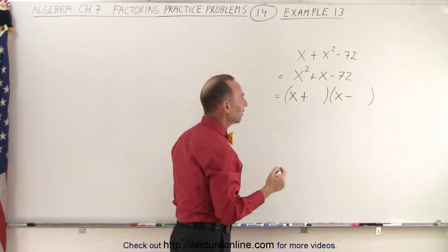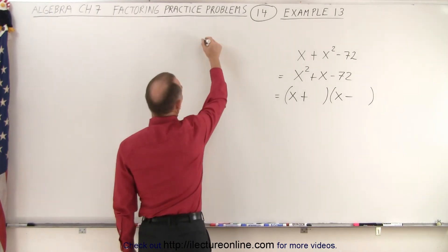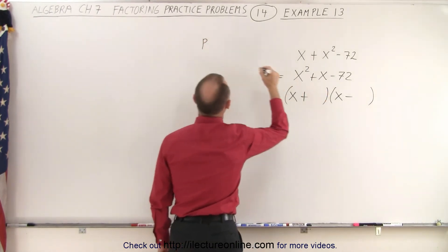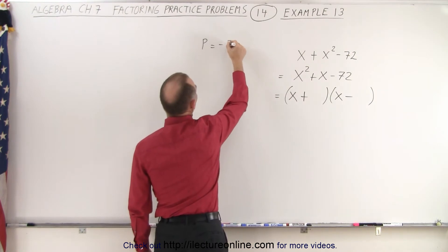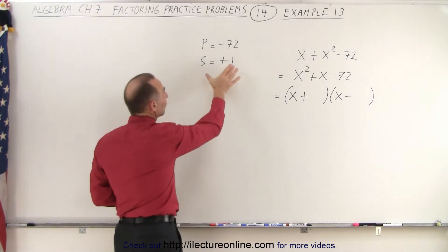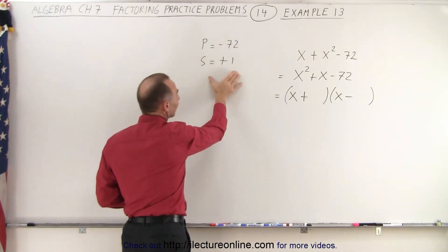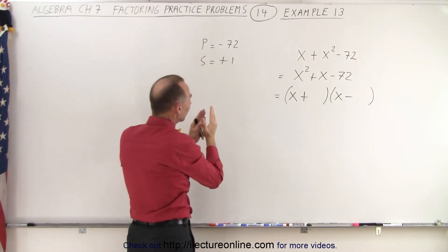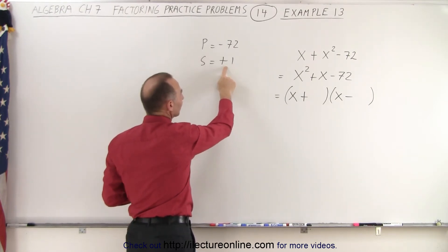Now, the way to figure it out is to know that the product of the two numbers that go here and here must equal negative 72, and that the sum must equal a positive 1. Because of this, we realize that the new numbers that I'm multiplying, one must be one bigger than the other.